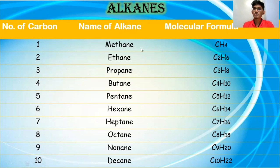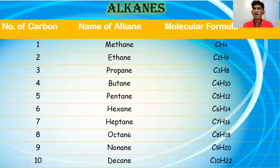Let us move on to the molecular formula. Methane: CH4. Ethane: C2H6. Propane: C3H8. Butane: C4H10. Pentane: C5H12. Hexane: C6H14. Heptane: C7H16. Octane: C8H18. Nonane: C9H20. And decane: C10H22.